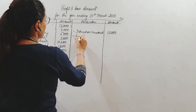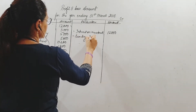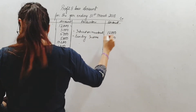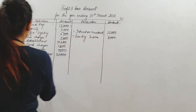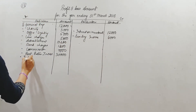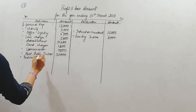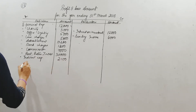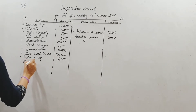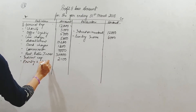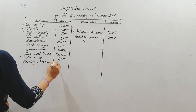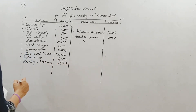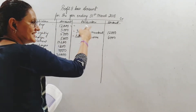Sundry income, meaning miscellaneous small income, comes here on the credit side. Indirect expenses — the name itself says indirect expenses — then we have printing and stationery of 1,500. Gross profit is brought here from the trading account. I will not write it as 'gross profit' but rather as 'by trading account — gross profit brought down,' or simply 'gross profit.' The amount is 7,69,000.